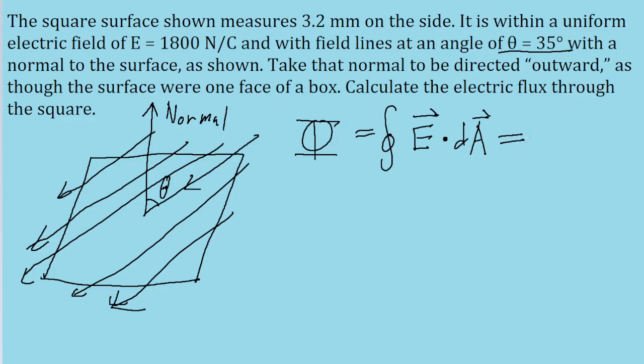this can be simplified to the magnitude of the electric field multiplied by the surface area multiplied by the cosine of theta.